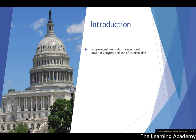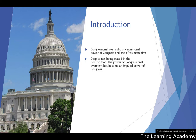Congressional Oversight is a very significant power of Congress — not just passing legislation, but overseeing the Executive is seen as a very principled expression of Congressional power. Despite the fact that a provision to explicitly oversee the Executive Branch isn't in the U.S. Constitution, over the years it has become an implied power of Congress. Congress has a number of powers to carry out this oversight, and some of these powers are very significant.